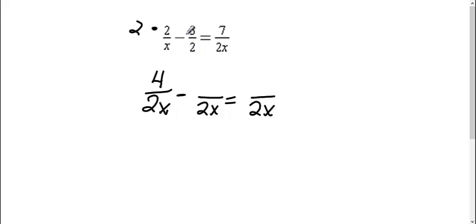This bottom here was missing an x, so I need to multiply the top by x. 3 times x, I get 3x. And this already had a 2x. I don't have to multiply it by anything.